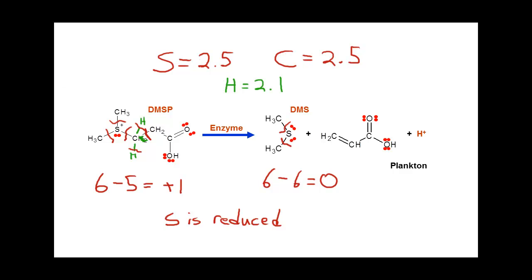Calculating the oxidation number of the first carbon: the valence electron count is 4, and after bond cutting — accounting for the two hydrogen bonds fully assigned to carbon and the equally cut bonds — carbon ends up with 6 electrons. So 4 minus 6 gives a minus 2 oxidation state. Going to the product side, I track this same carbon and apply the bond cutting method again.